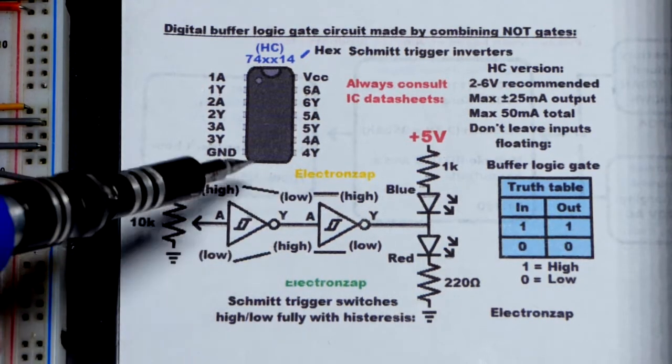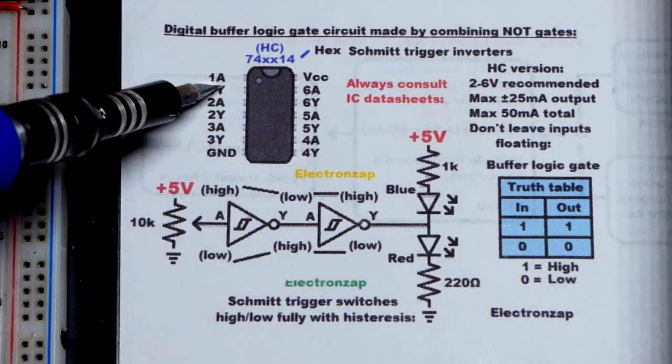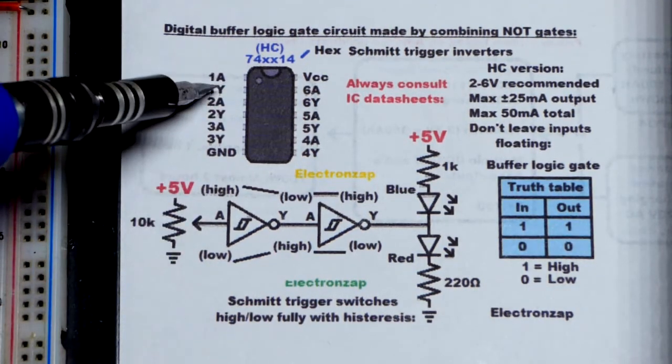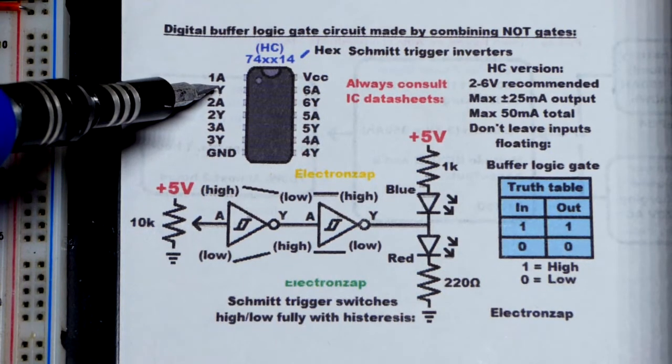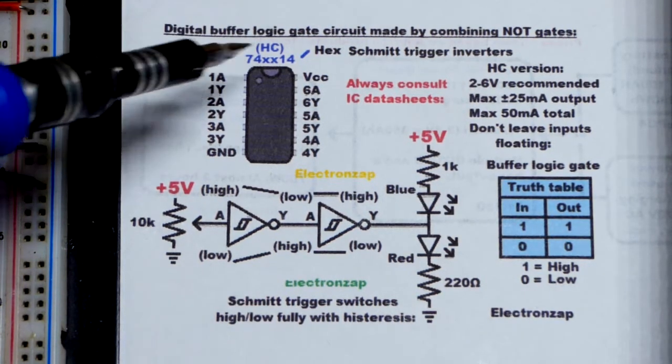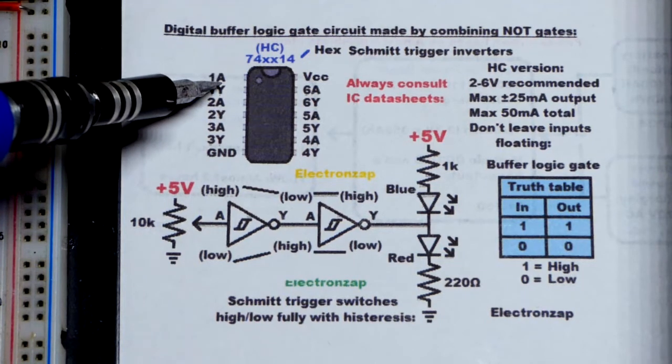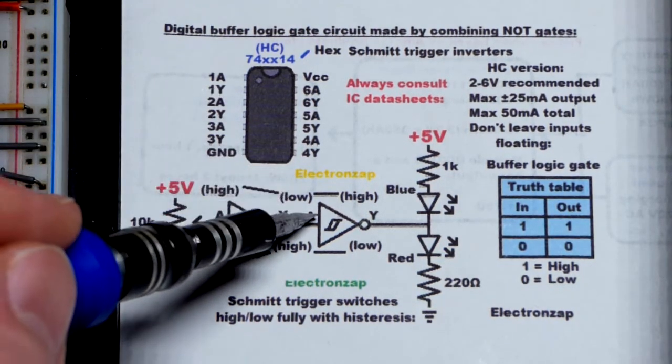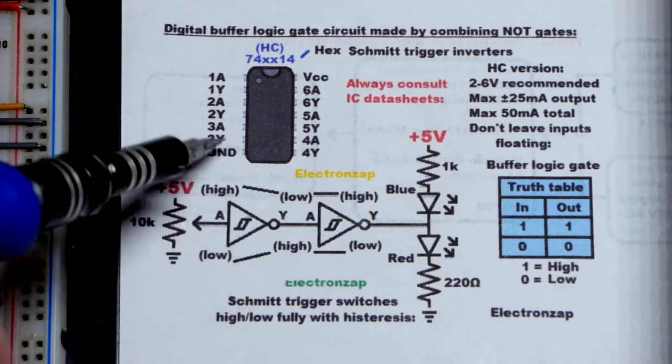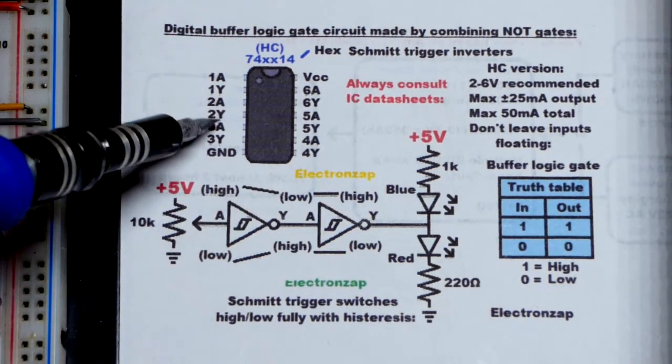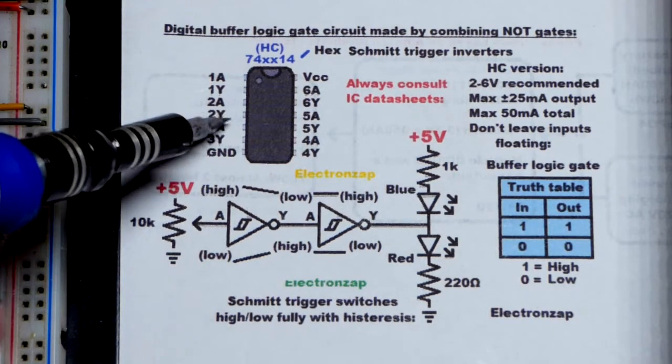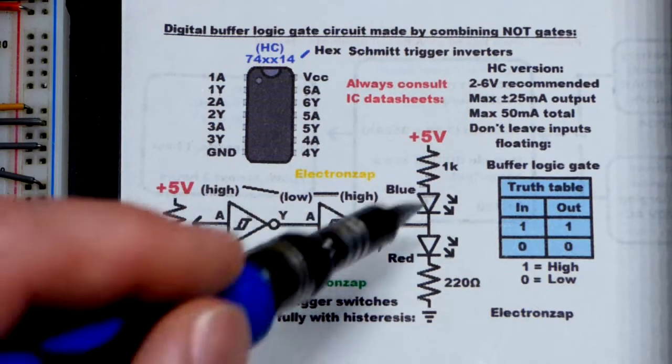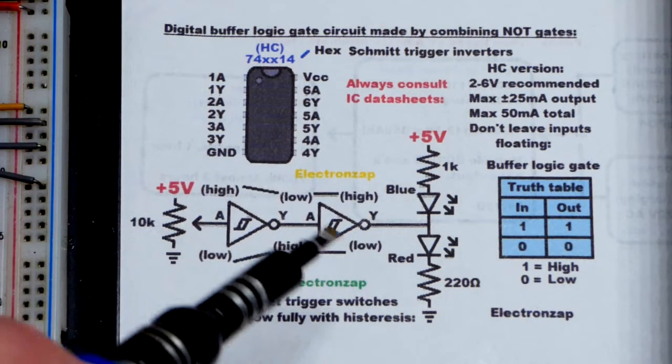We had the input signal from the trim pot going to 1A right there. Then we had 1Y which inverted it, as I first demonstrated, because that's what this integrated circuit's intended for. But that 1Y output was connected directly to the 2A input of the next inverter, so I got a little jumper connecting the two, and that became our output right there, 2Y.